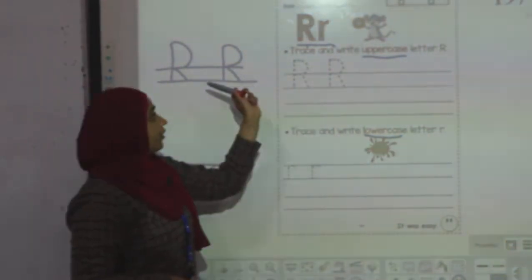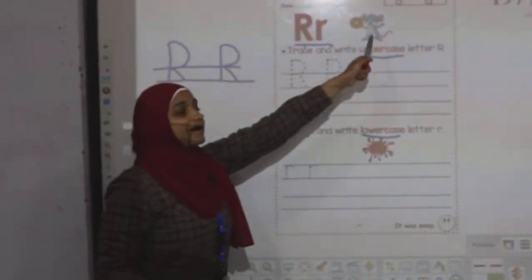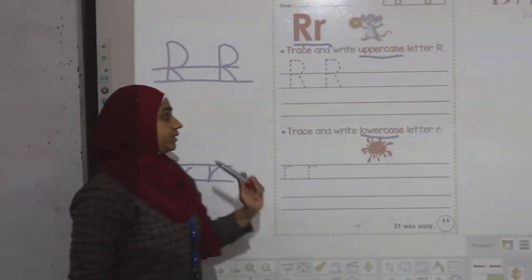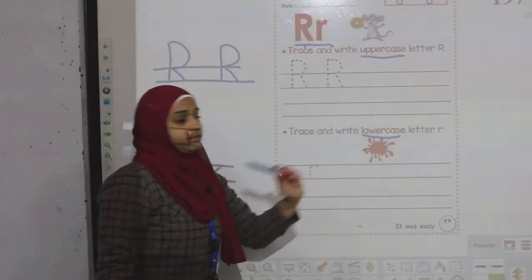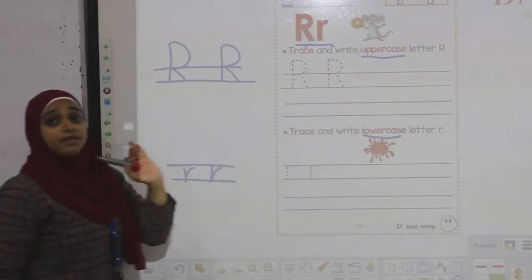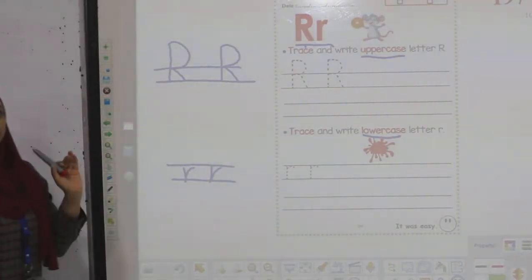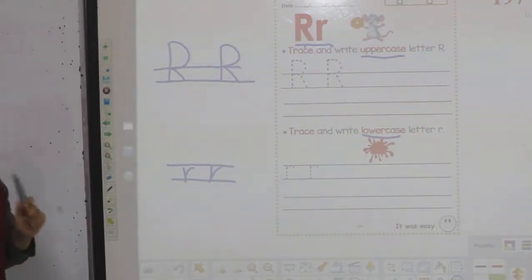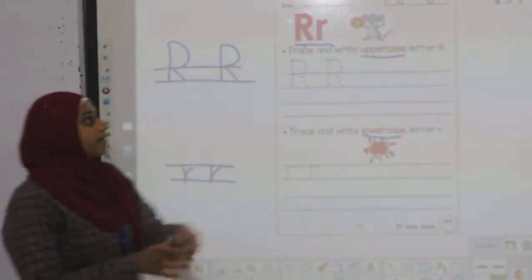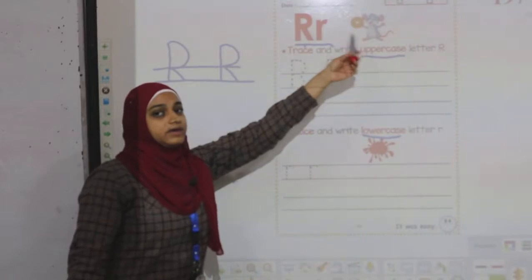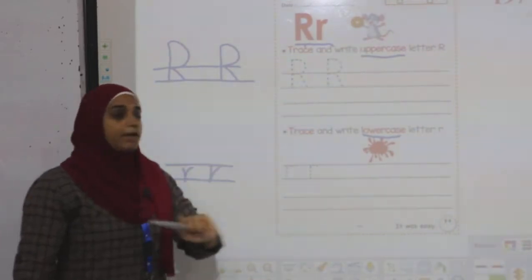R for rat and R for red. This is the name of the letter, and its sound is R. Rat. R — red.